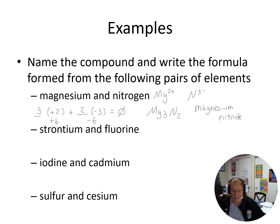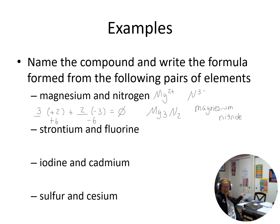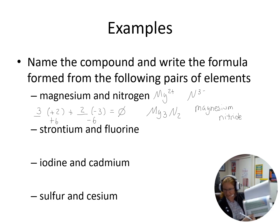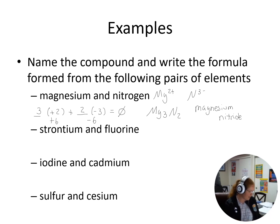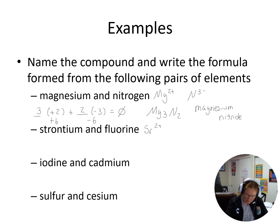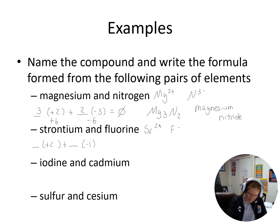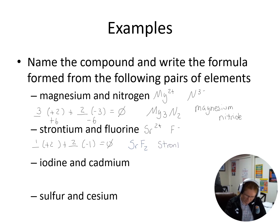If you have a periodic table in front of you, you can look up what each element's group is. All chemistry textbooks have a periodic table. So strontium and fluorine: strontium is Sr, also in group 2A, so it makes a plus two. Fluorine is group 7A, so it needs one more electron — that's a minus one. Balancing: one strontium plus two fluorines gives SrF₂. The name is strontium fluoride.